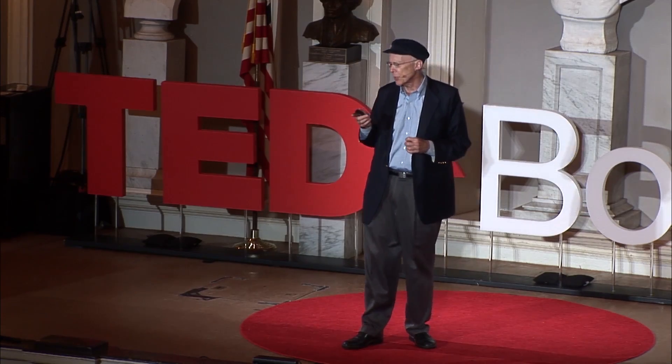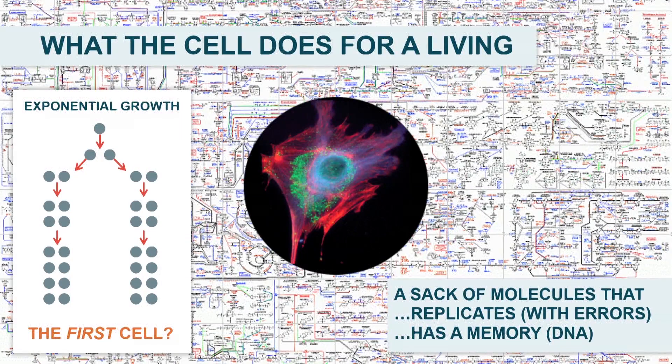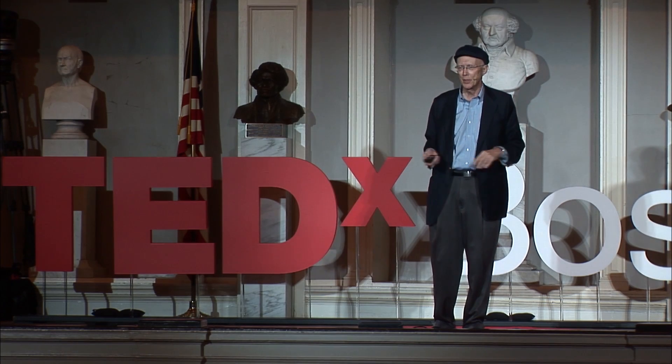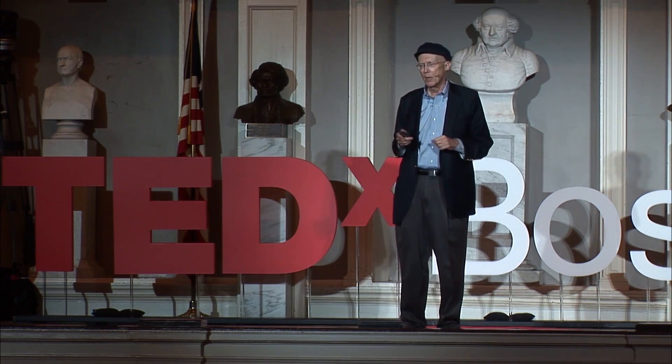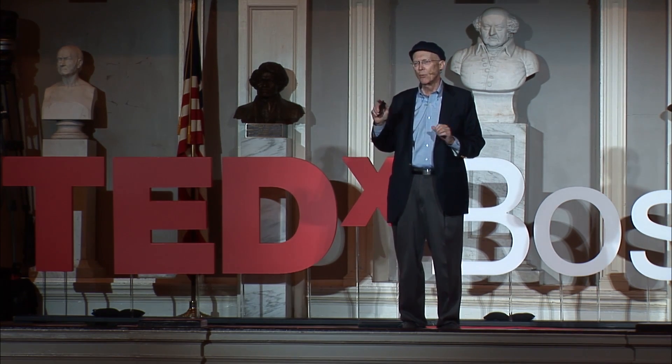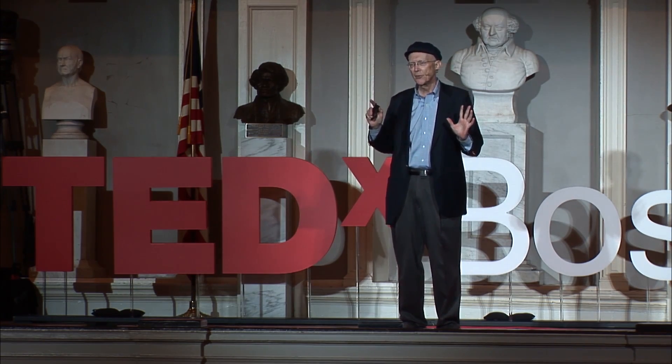We want to focus initially on the cell. Let me give you the hyper-crude version of what a cell does for a living. A cell's purpose in life is to make two cells, and each one of them has a purpose, which is to make two more cells. That's it. It does this using a maze of reactions involving molecules converting into other molecules. The key thing to understand about a cell is that it is nothing more than a sac containing molecules that are reacting with one another. It's just chemistry, as far as we can tell.